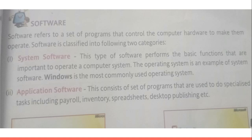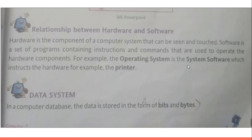If we categorize application software, they come into categories such as payroll systems, inventory, spreadsheet, desktop publishing, or Adobe Photoshop for editing photos — all these come into the category of application software. As I have told you, there is a relationship between hardware and software.